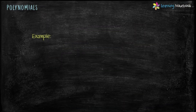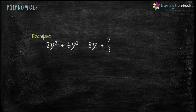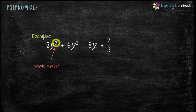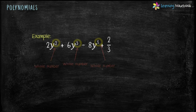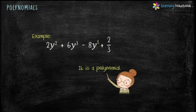Let's take one more example: 2y square plus 6y cube minus 8y plus 2 by 3. Here the variable is y. The first term is 2y square, where power of y is 2 — a whole number. Second term is 6y cube, where power of y is 3 — a whole number. In the third term, 8y, power of y is 1 — a whole number. The fourth term, 2 by 3, is a constant. Since all powers of the variable are whole numbers, this expression is a polynomial.